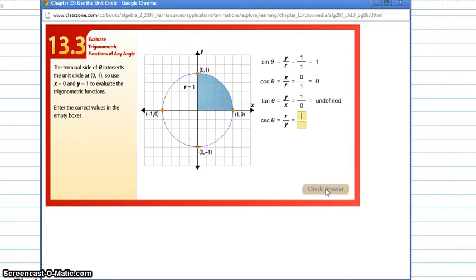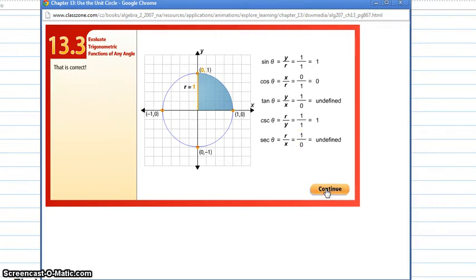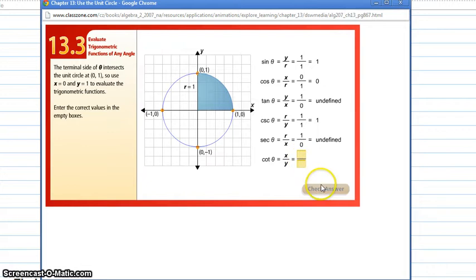Our cosecant, essentially our sine flipped, our radius is 1 and our y value is also 1, so 1 over 1 is 1. Our secant, our radius over our x value, so 1 over 0, which we see is undefined. And our cotangent is x over y. So our x value is 0, our y value is 1.